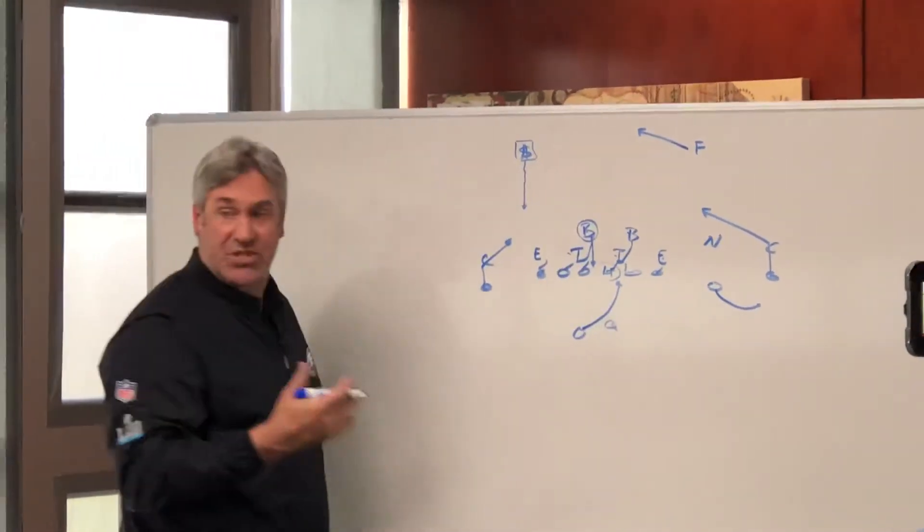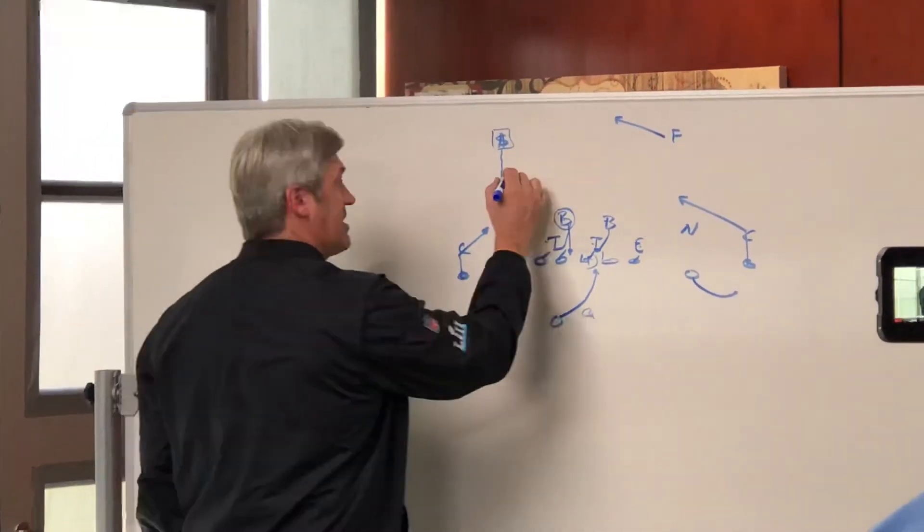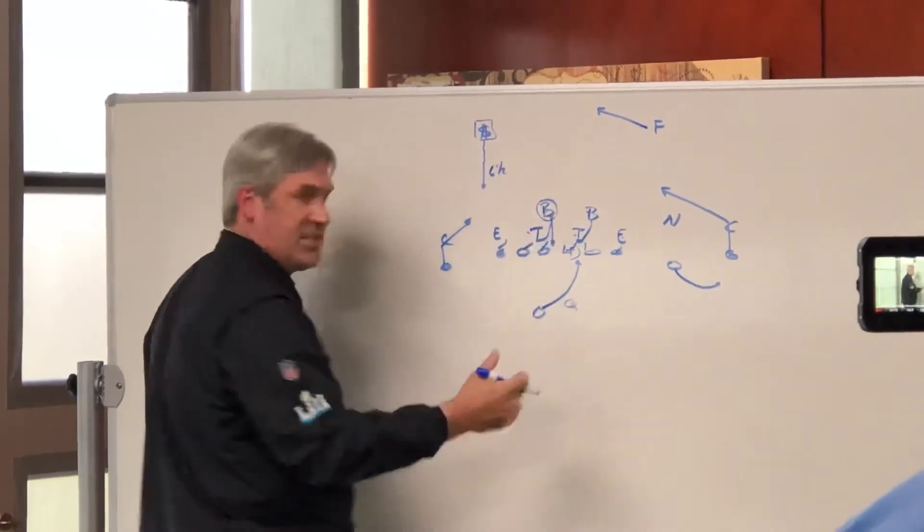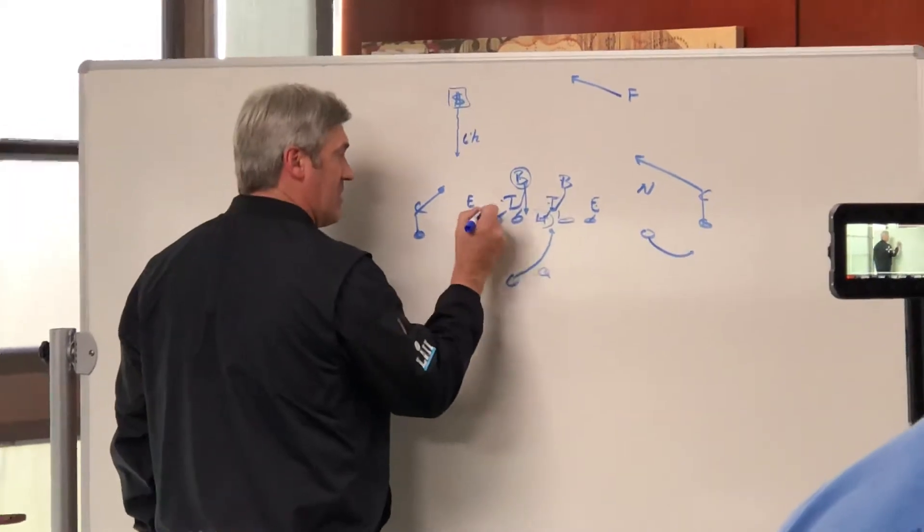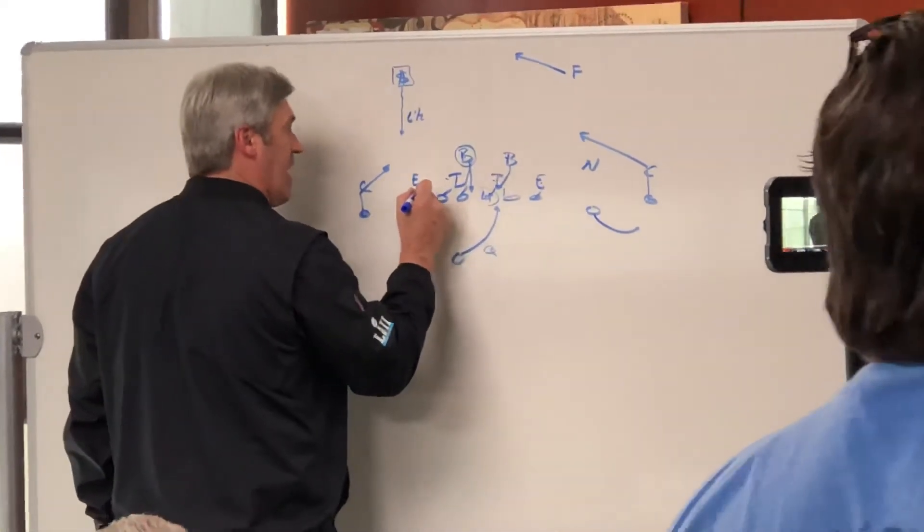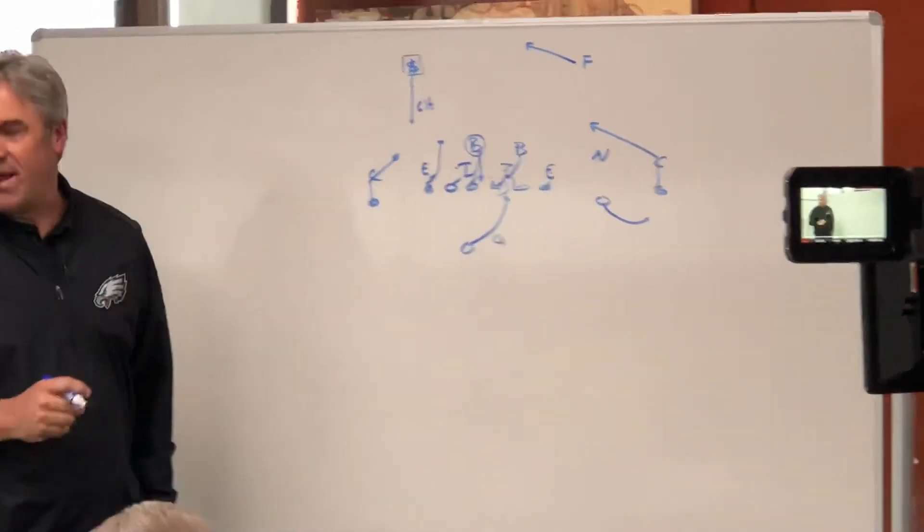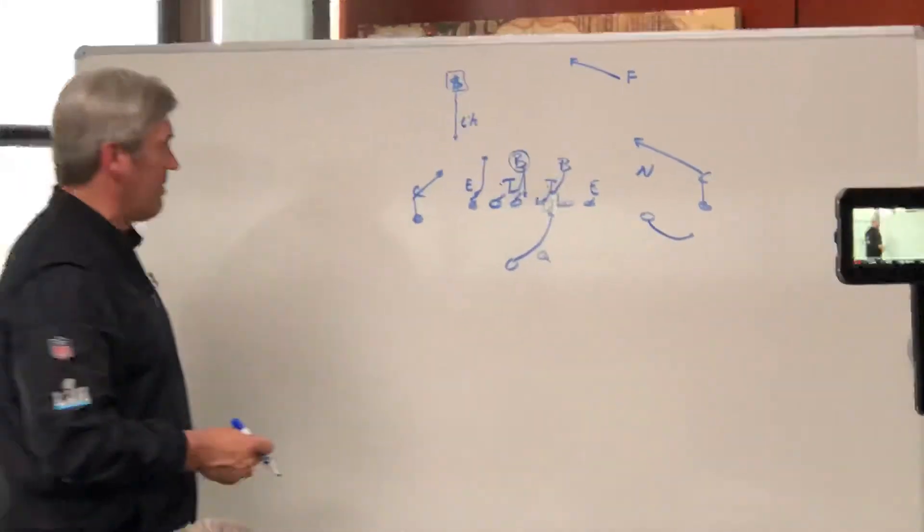If the safety is coming out of the sky, we call that a six-and-a-half-man box, still a give. Because now what we're asking the tight end to do is basically a sift technique. He's either going to stay on or he may work up and block that safety, most dangerous, on the backside.